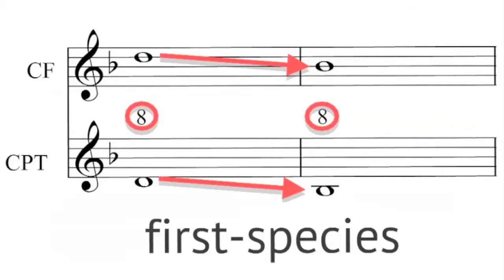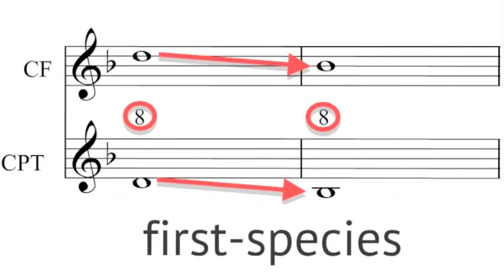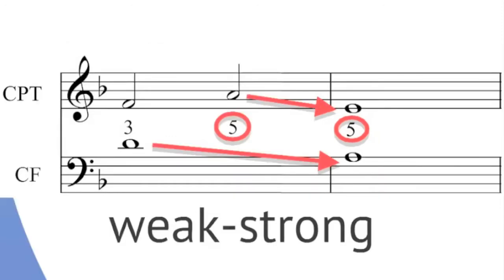In first species parallel perfect intervals are strictly forbidden. In second species parallel perfect intervals are also forbidden but there are a few more scenarios we need to consider. Parallel perfect intervals across a bar line, that is from weak to strong beat, are not permitted.